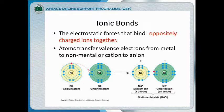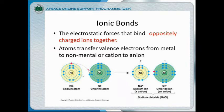We can say the electrostatic forces that bind oppositely charged ions together. All the metals have a tendency to lose electrons and form cations, and all the non-metals have a tendency to gain electrons and form anions. Cations have a positive charge and anions have a negative charge. They are opposite in nature, so due to this opposite nature they attract each other, and the type of bond formed is known as an ionic bond.